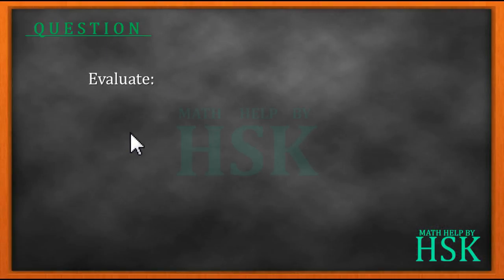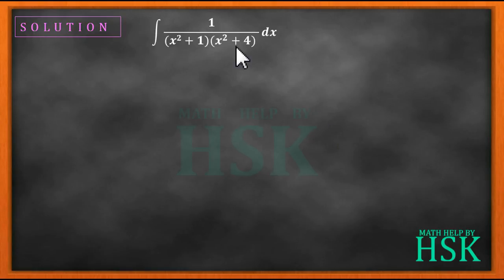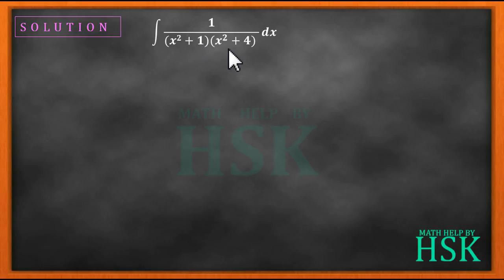Hello friends, the question is: we have to evaluate the integral of 1 upon (x² + 1)(x² + 4) with respect to x. On observing the function which we have to integrate, we see that it is a product of two quadratic expressions: (x² + 1) and (x² + 4).